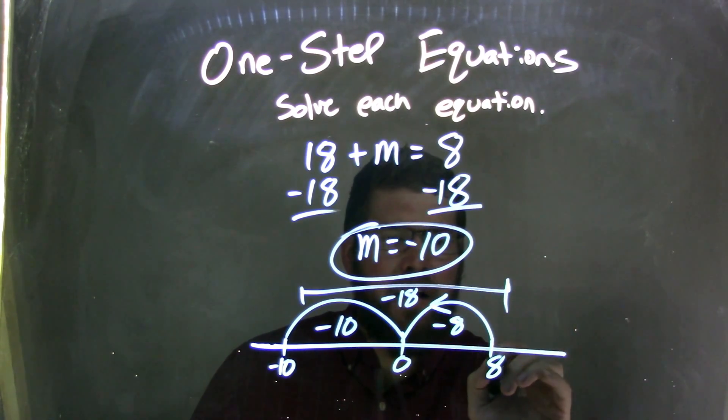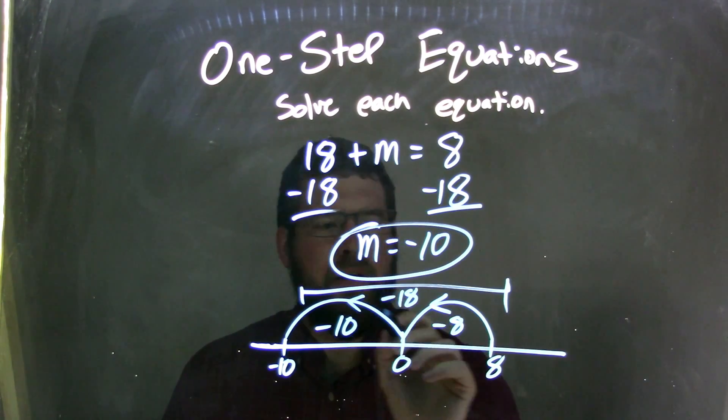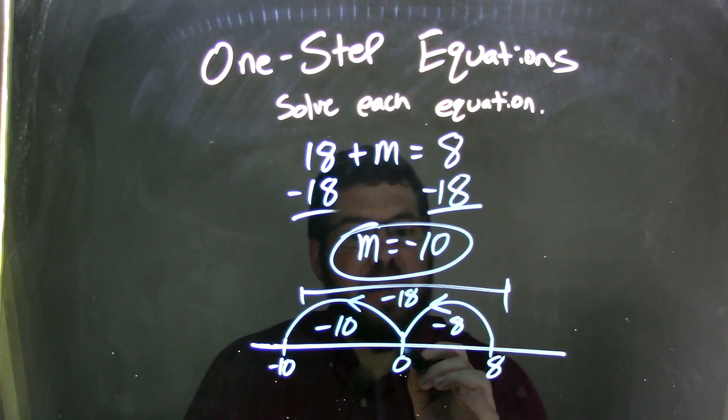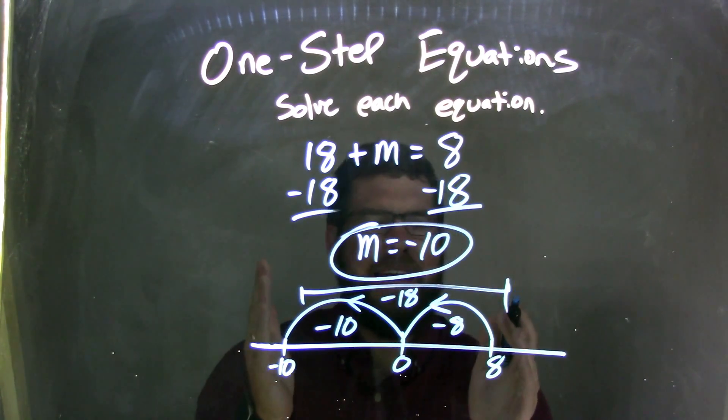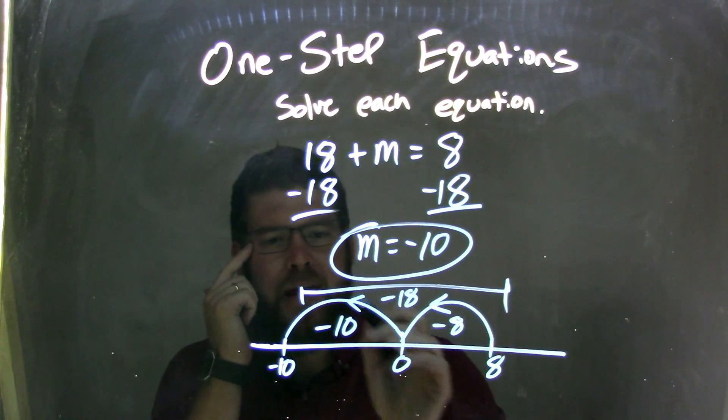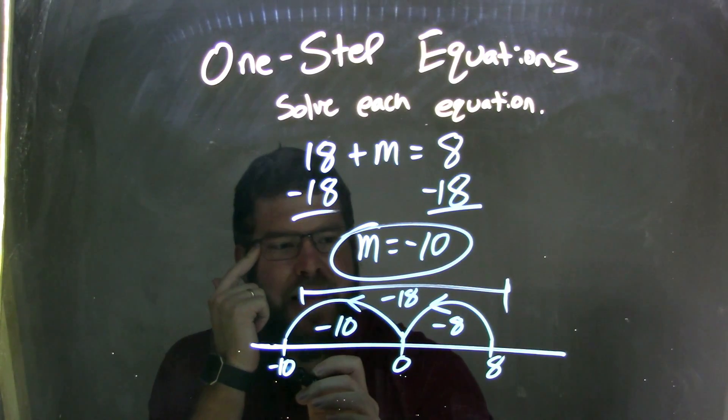Well, I start with 8 on the number line, a little trick I like to do here. I subtract 8 units, right? Subtract 8 units gets me to 0. Another 10 units give me an overall subtraction of 18, minus 18. 10 more units to the left gets me to negative 10.